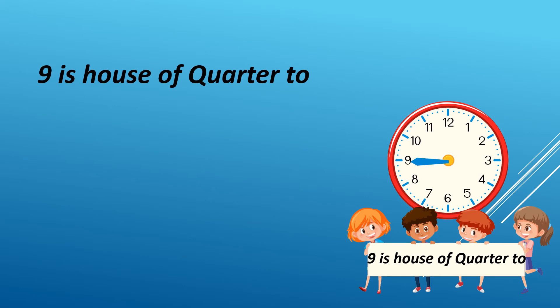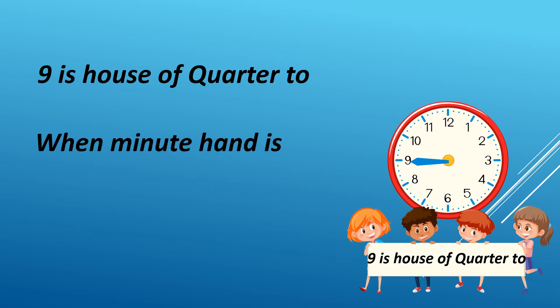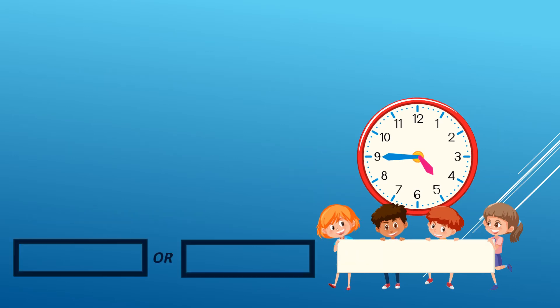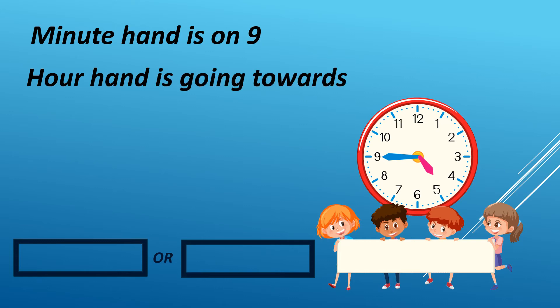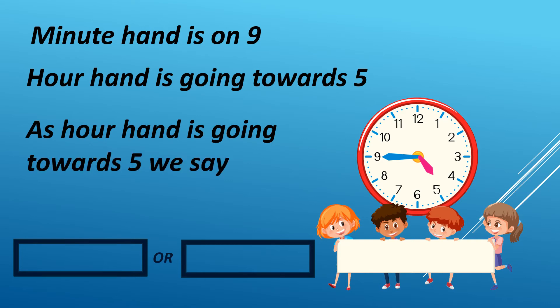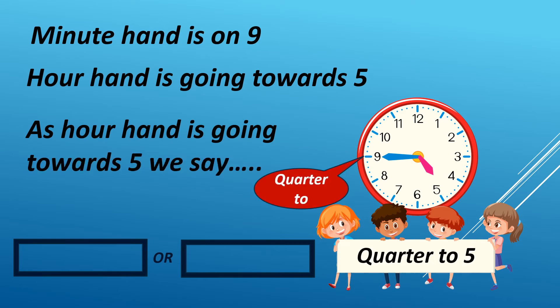9 is the house of quarter to. There were 9 family members and the name of the house was quarter to. When the minute hand is on 9, we always say quarter to. When the minute hand is on 9 and the hour hand is going towards 5, we say quarter to 5.